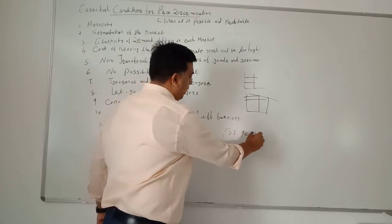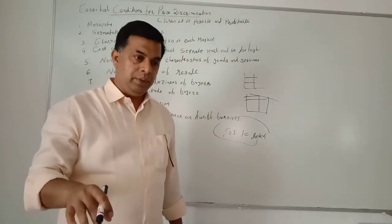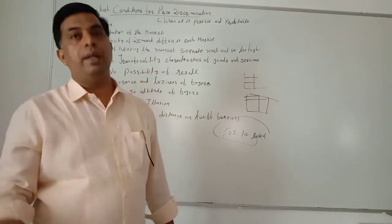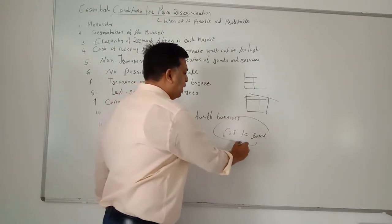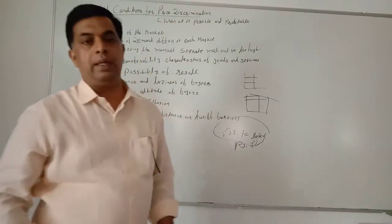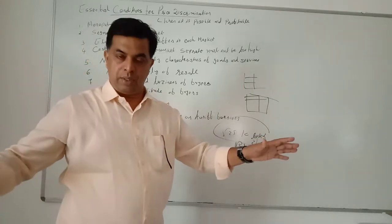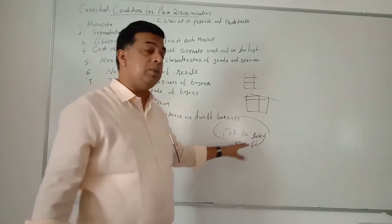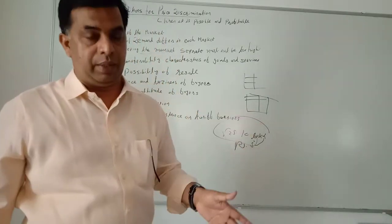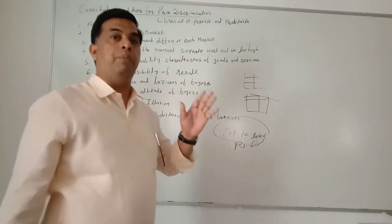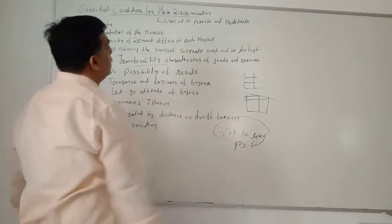If the cinema owner has spent ten lakh rupees to make the markets separate but is getting a profit of only five lakh rupees from separating the markets, then in that situation we would say price discrimination is possible here but price discrimination is not profitable. So price discrimination should be possible as well as profitable.